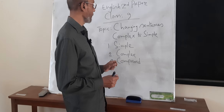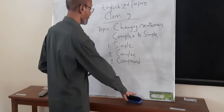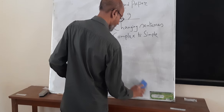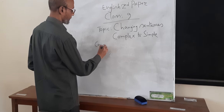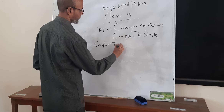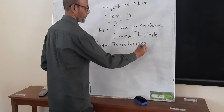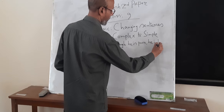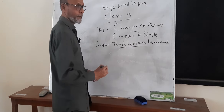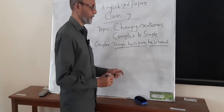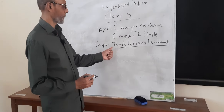Today I want to introduce you to how to change a complex sentence into a simple sentence. For example, look at this complex sentence: 'Though he is poor, he is honest.' This is a complex sentence — this is the subordinate clause and this is the principal clause. We have used the special word 'though' here.